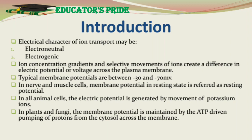For example, the sodium-potassium pump imports two potassium ions and simultaneously exports three sodium ions — that is, it moves one positive charge out of the cell. Active transport of ions by ATP-driven ion pumps generates and maintains ionic gradients. Ion concentration gradients and selective movement of ions create a difference in electric potential or voltage across the plasma membrane. This is called membrane potential.